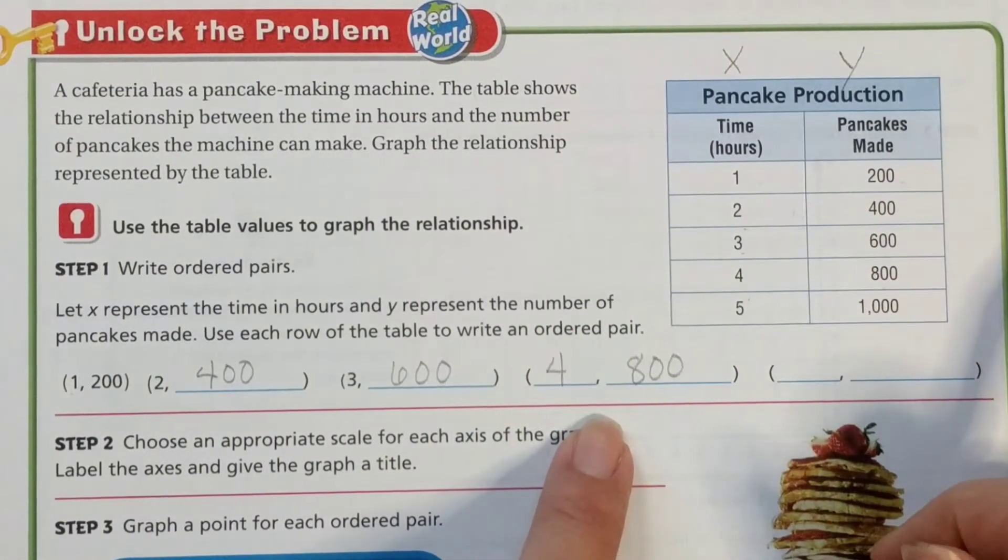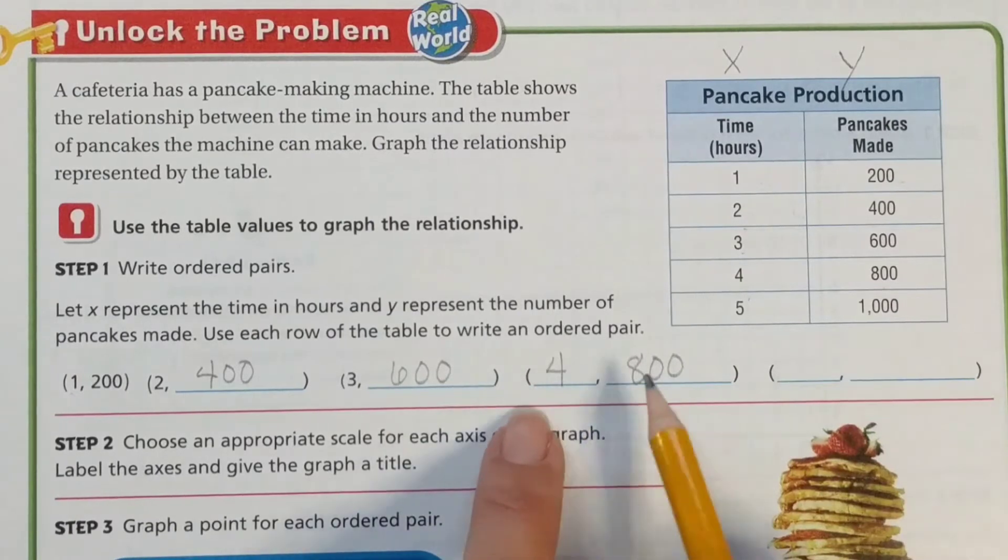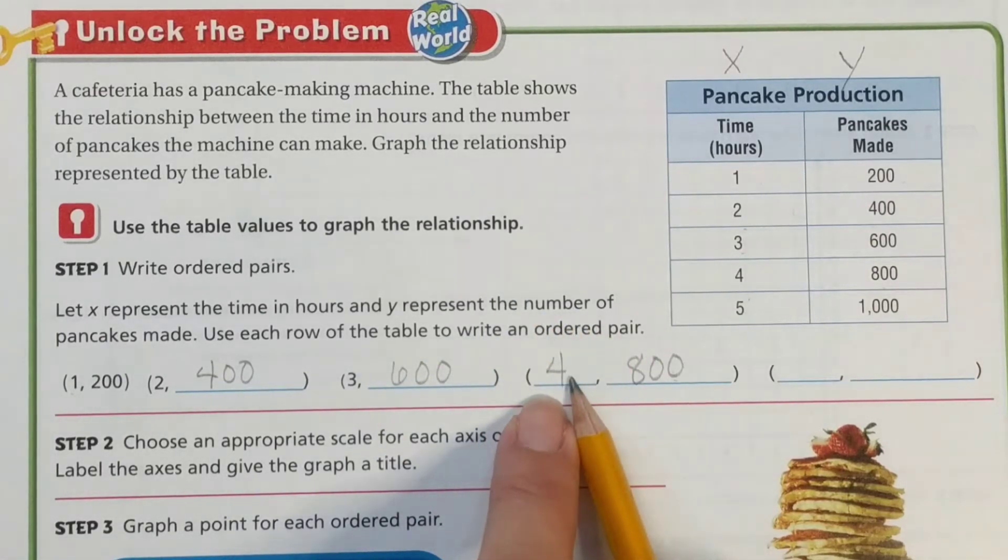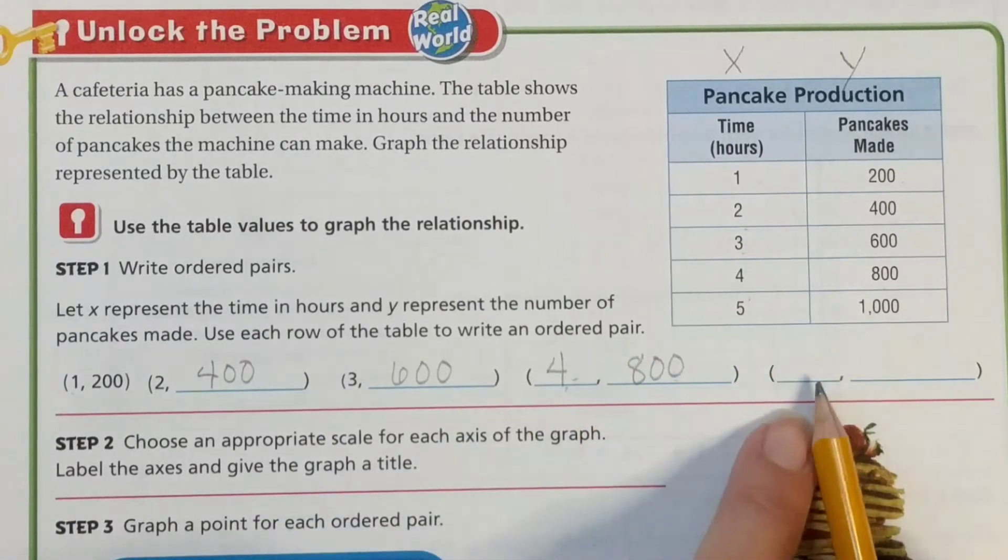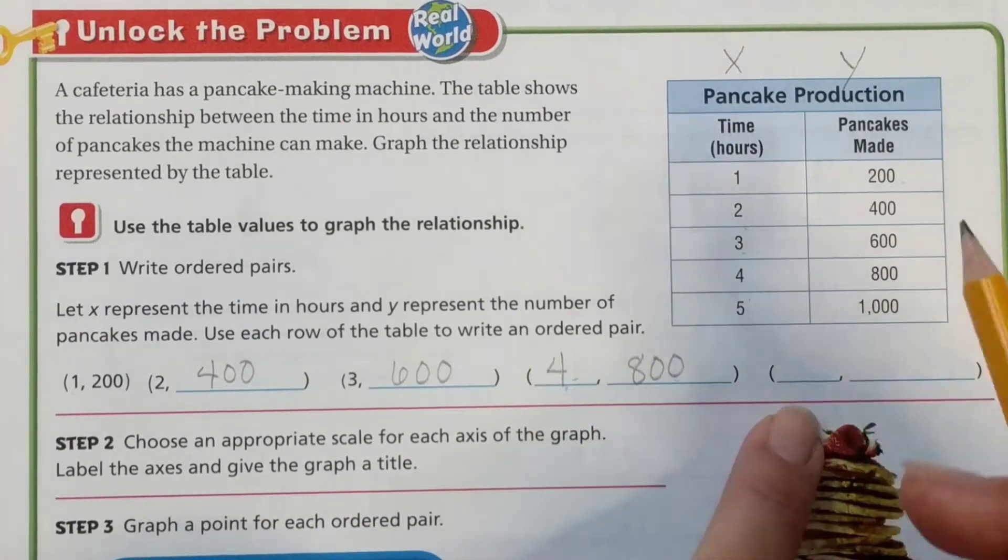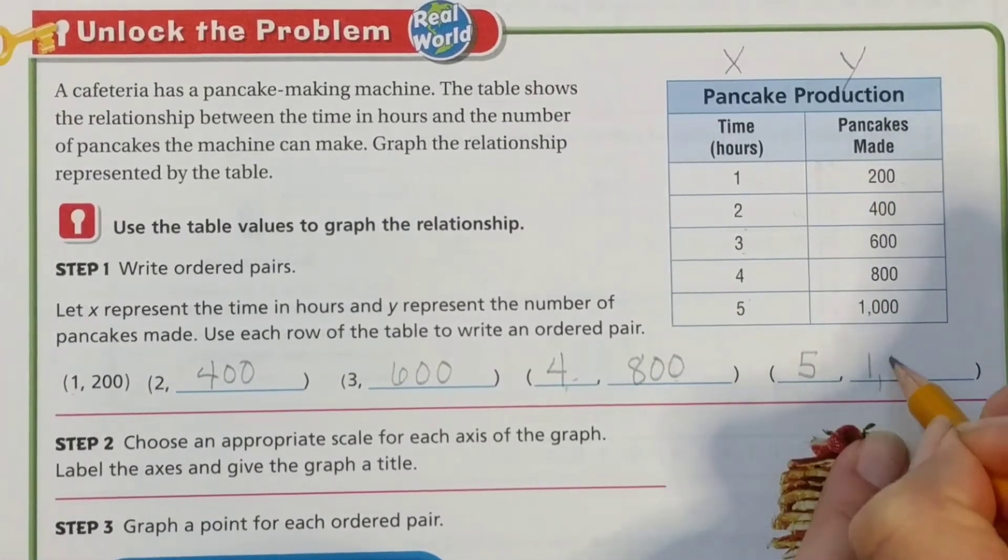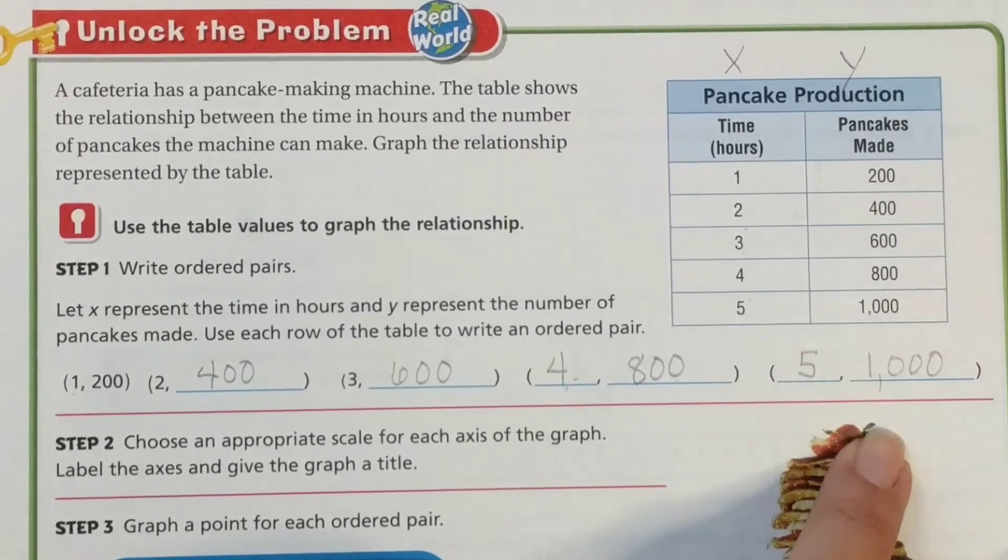And to use some vocabulary from previous lessons, this is our independent variable. This is our dependent variable. How many pancakes you make depends on how long you can stay and make those pancakes. Alright, and finally our last ordered pair. We have five for our X coordinate and we have 1,000 for our Y coordinate in our ordered pair.